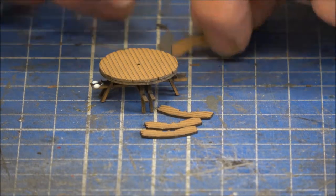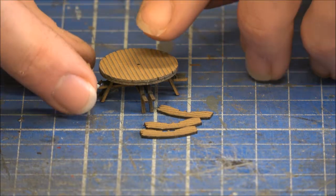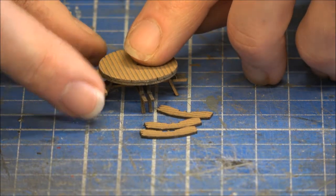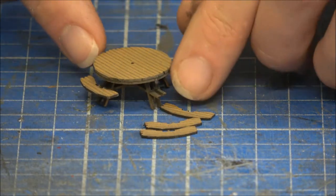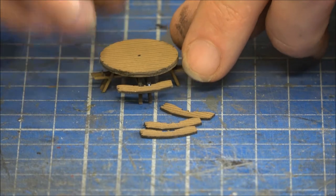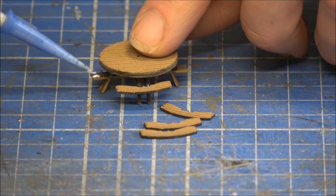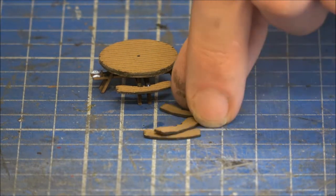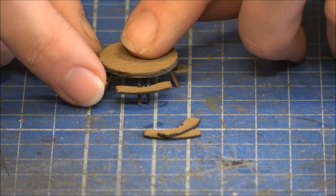And then carefully drop the actual seat onto the two legs. And then just work your way around the table, just adding the seats as you go.